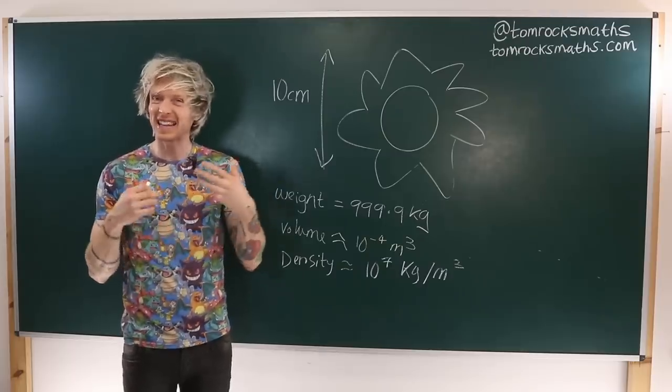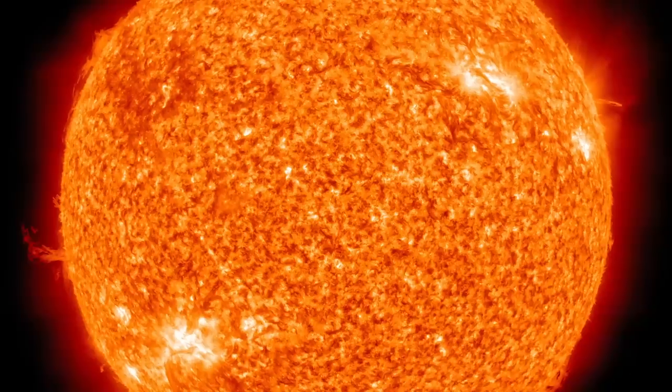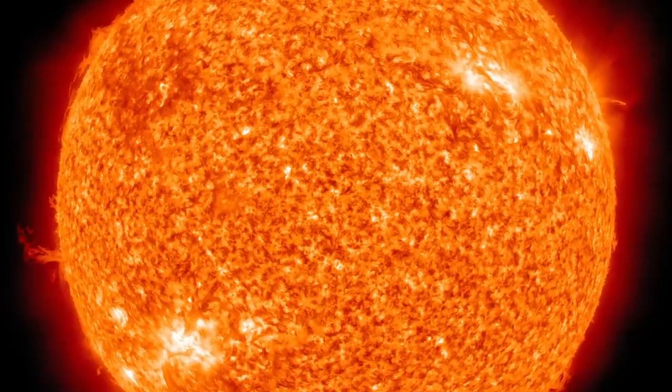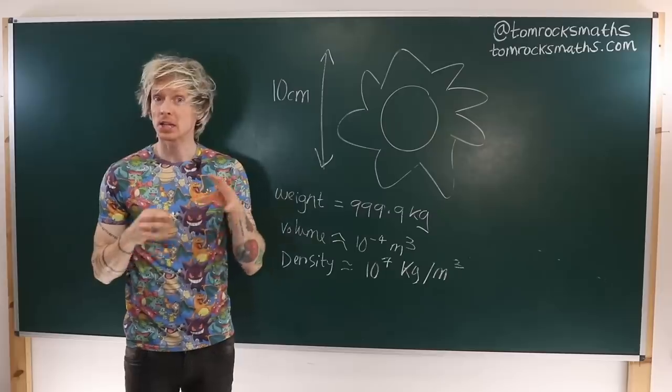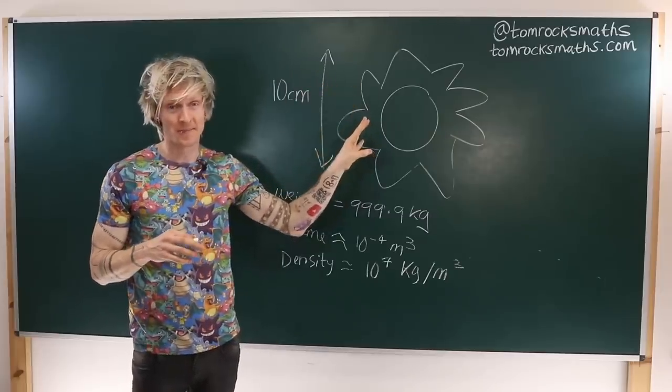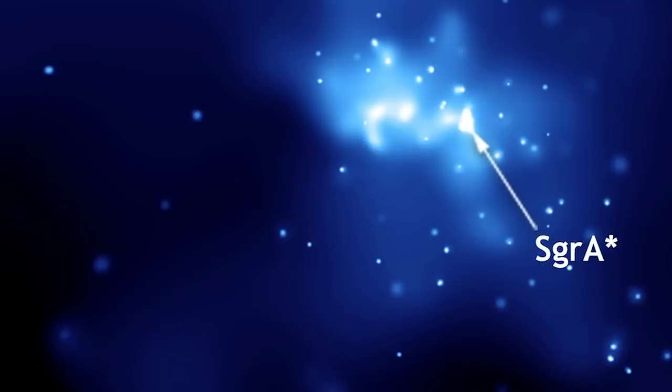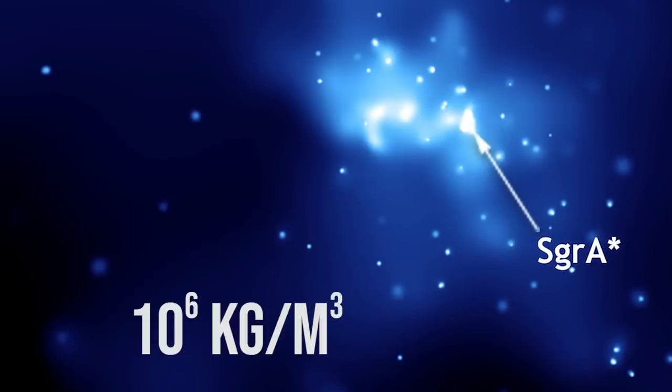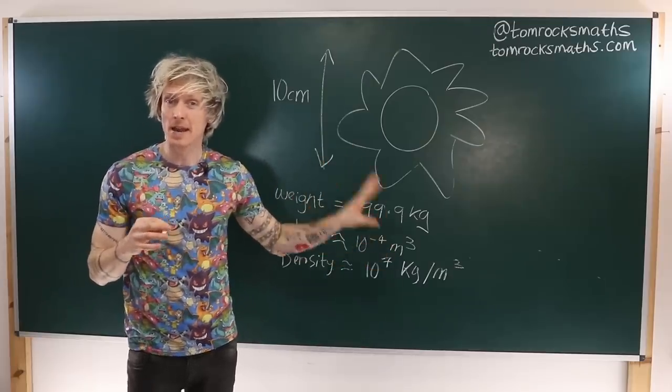The core of the Sun has a density of around 1.5 times 10 to the 5 kilograms per meter cubed. Again, a lot less than our Pokemon. Heck, even the Sagittarius A-Star Black Hole has a density 10 times less than Cosmoem. So yes, this is a very big number.